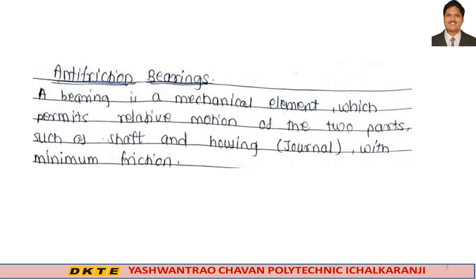Due to relative motion between the contact surfaces or rubbing surfaces, a certain amount of power is wasted in overcoming frictional resistance. Further, if these rubbing surfaces are in direct contact with each other, then frictional resistance becomes too high, leading to very rapid wear of contact surfaces.